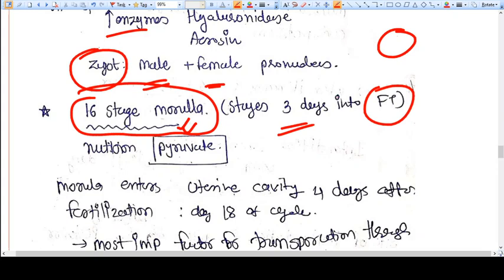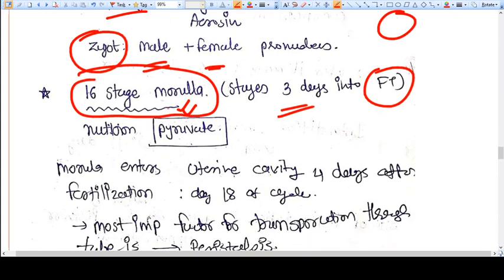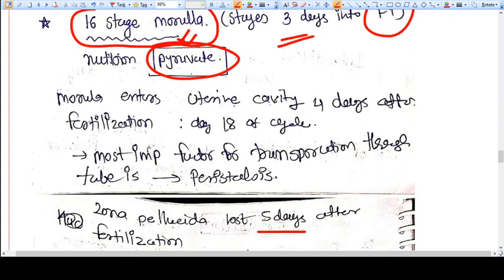The nutrient that is most important for surviving of this embryo is pyruvate. Morula enters into the uterine cavity four days after fertilization.